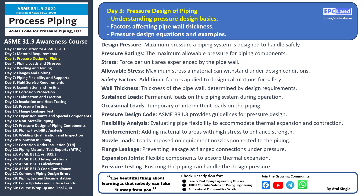Pressure ratings are crucial for piping components and fittings. These ratings indicate the maximum allowable pressure that a component can withstand. Ensuring that components are selected with sufficient pressure ratings is vital for the system's integrity. Stress is the force experienced by the pipe wall per unit area, and allowable stress is the maximum stress a material can withstand without failing under design conditions. Safety factors are applied to design calculations to account for uncertainties and variations in operating conditions.